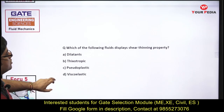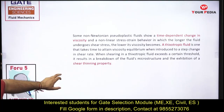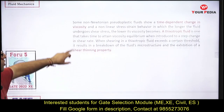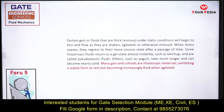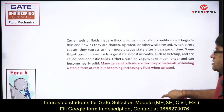Shear thinning property is displayed by thixotropic fluids. Some non-Newtonian pseudoplastic fluids show time-dependent viscosity change—the longer the fluid undergoes shear stress, the lower its viscosity becomes. Examples include gels and ketchup: stable at rest but increasingly fluid when agitated. Both agitation and time cause viscosity variation in thixotropic materials. The Clausius-Clapeyron equation gives the relation between vapor pressure and temperature.